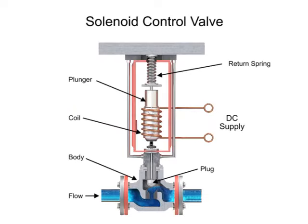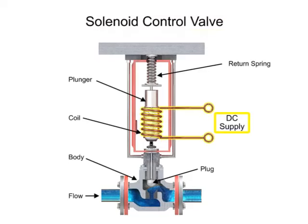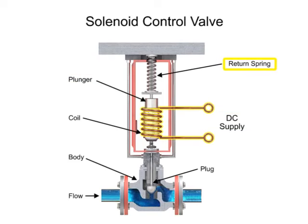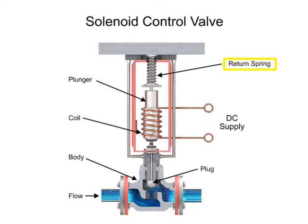For on-off control of the valve, a solenoid is used to actuate the valve to a fully closed or fully open position. Applying current to the coil generates a magnetic field that moves the plunger downward against the return spring. With zero current applied to the coil, the spring pulls the plunger upwards to the fully open position for a normally open state control valve.